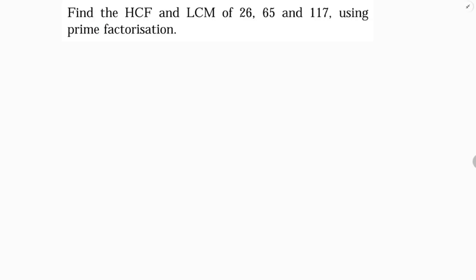Find the LCM and HCF of 26, 65, and 117 by using the prime factorization method. The prime factors of 26 are 2 times 13, so 26 = 2 × 13.